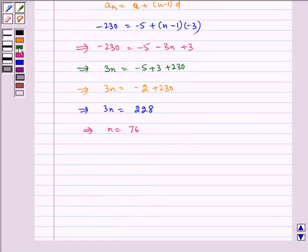Now we have got the value of N. So using this we can find sum. Therefore S is equal to N by 2 multiplied by A plus AN. So which is equal to 76 by 2, A is minus 5 plus AN which is minus 230.